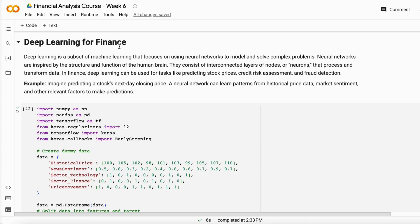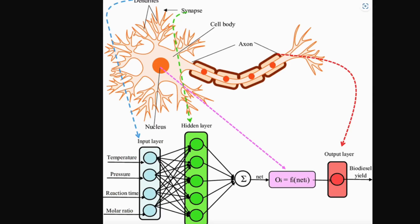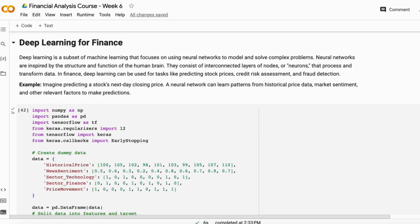Let me show you how a neural network actually looks. This is based on the human brain neuron, because a neural network is a replica of the human brain neuron. It has the same features: input layers, hidden layers, activation functions, and an output layer. When we pass information through it, it processes via its hidden layers and activation function, then gives us the output.